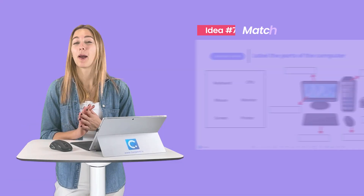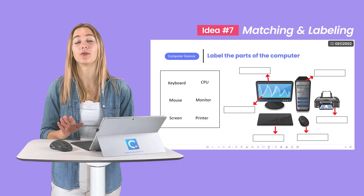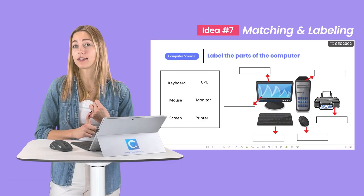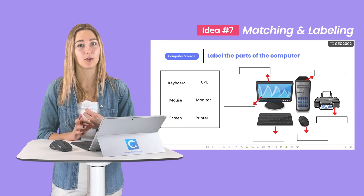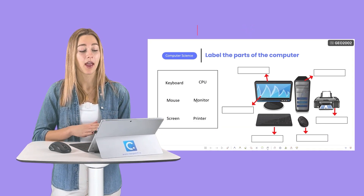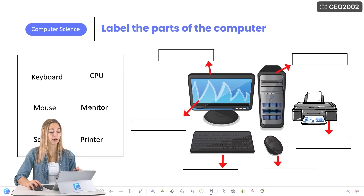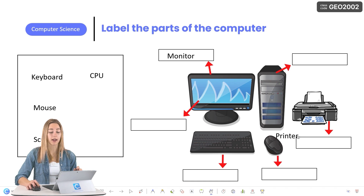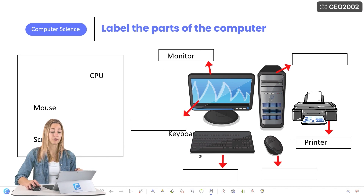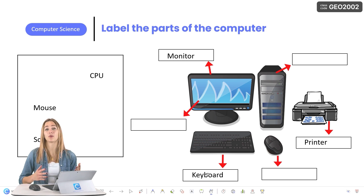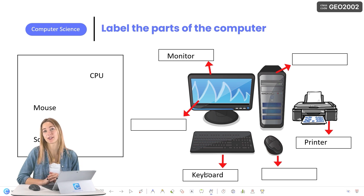Seven: matching and labeling is a great way for students to comprehend new concepts and new vocabulary. As we're going through the new vocab words, I can drag the word to the correct location on the diagram. This makes it a little bit easier for students to follow along and make those visual connections to put more meaning behind each one of the words.